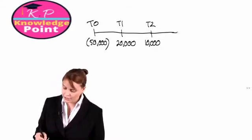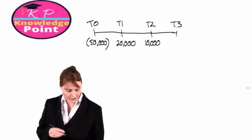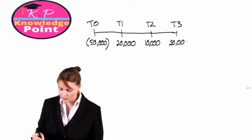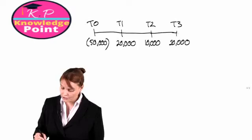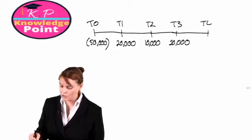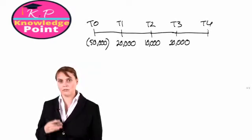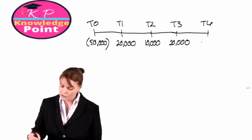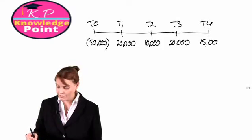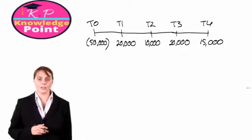And at the end of another year, this brings us to 2014, the end of the year, T4, we'll have a cash inflow of $15,000.